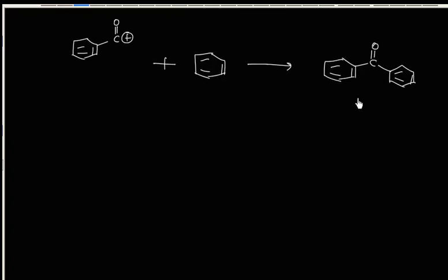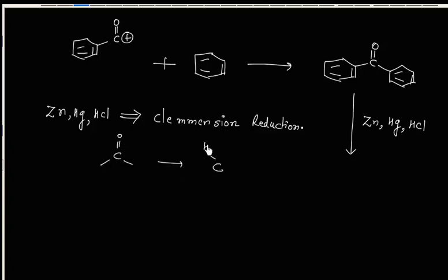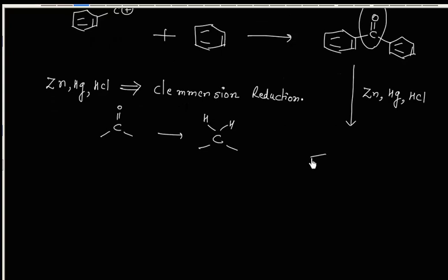What will be the product if this compound is treated with Zn(Hg)/HCl? Zn(Hg)/HCl is known as Clemmensen reduction. This reagent is used for Clemmensen reduction. In this reaction, the C=O group is converted into a CH2 group. So in this case, this C=O group will be converted into a CH2 group, giving the final product.